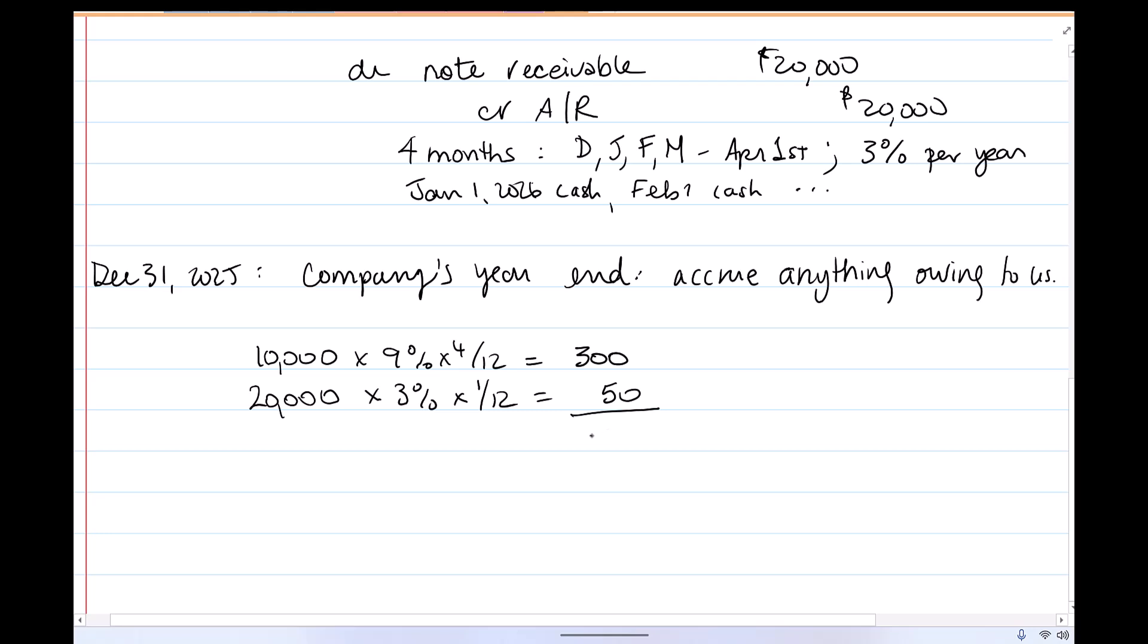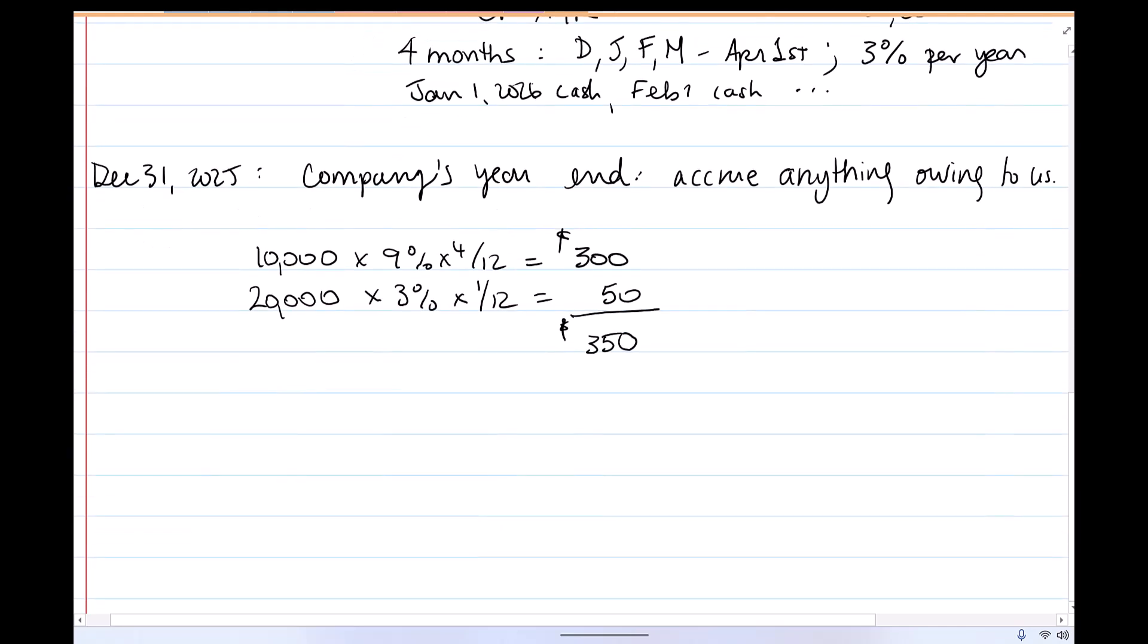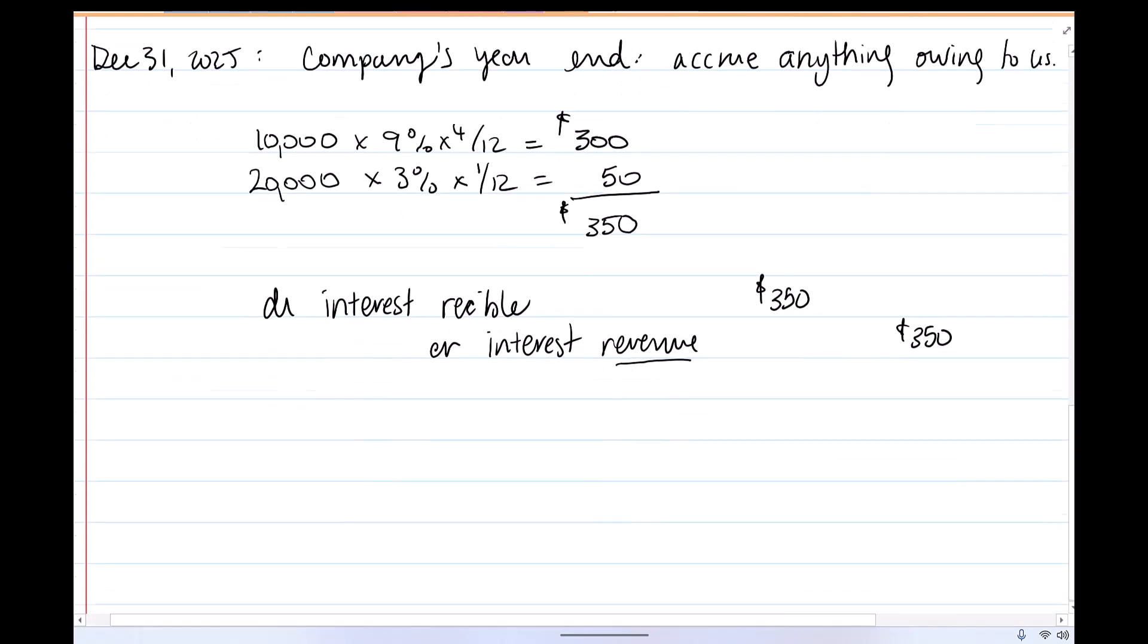So at year end, and I'm just going to do one journal entry for it. At year end, there are companies that we have notes receivable from. They're going to pay us that we have earned income on. So we are going to debit interest receivable and we are going to credit interest revenue. We haven't received the amount here. It isn't due today, but we have earned it over the past number of months, depending on the note. So therefore we need to record that it's owing to us and put it on our income statement as interest revenue. Interest revenue, interest income, investment income, those are usually all acceptable.